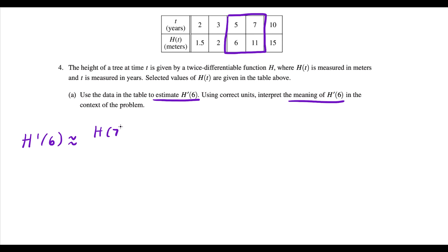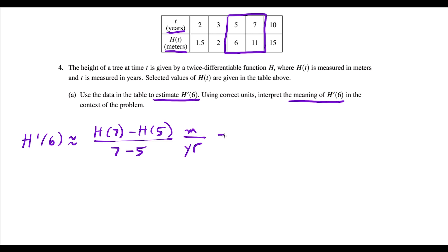So we're going to do h of seven minus h of five over seven minus five. We have to use correct units. For the function values h, the units are meters, and for t — the seven and five — the units are years. So we're going to say meters per year. This works out to 11 minus six over two, which gives us five over two meters per year.